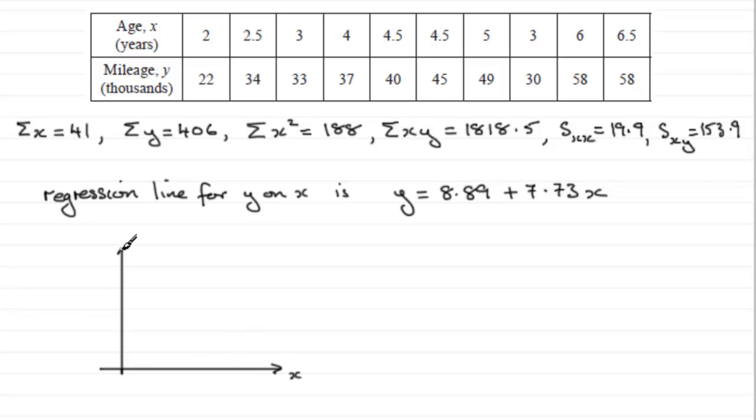So we've got X and we've got Y here. Now X represented the age in years, so put that age and we'll have that in years on that axis. And Y was the mileage in thousands of miles.